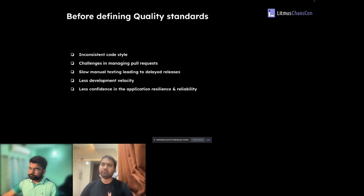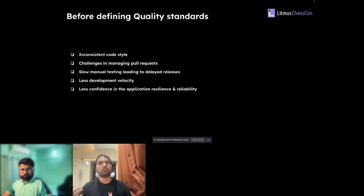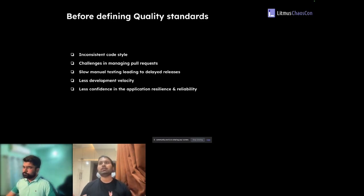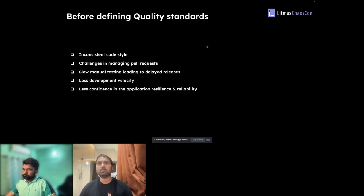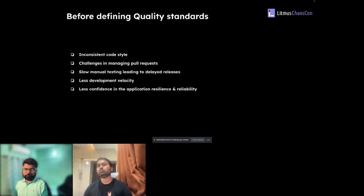Another challenge: when someone merges a PR, we have to review and merge it. At that time we didn't have automation, so we were doing everything manually — checking builds, how code was written, lint checks — causing delays in merging. These delays resulted in merge conflicts in the community.